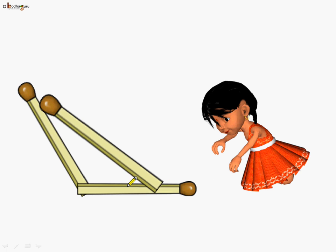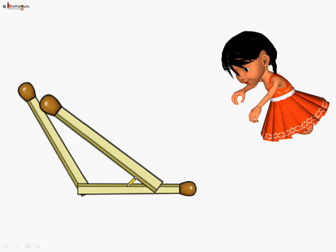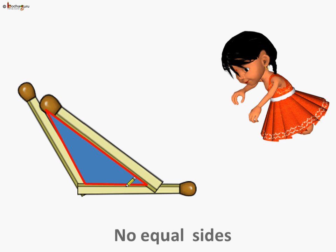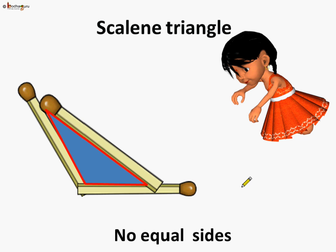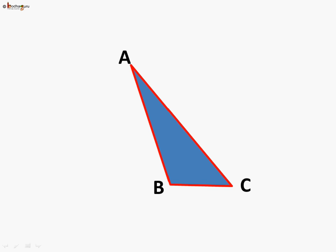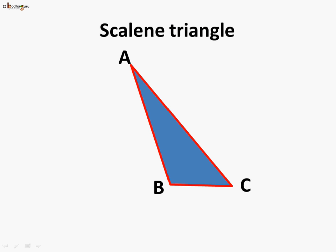Gushi drew another type of triangle. If we measure the length, we will see no two sides are equal in length — all sides are of different lengths. This type of triangle is called a scalene triangle, where no two sides are of equal length. The lengths are not equal, and this is called a scalene triangle.